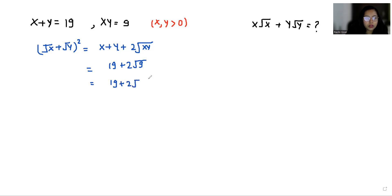Now 19 plus 2 times 3, which is 19 plus 6, that is 25.